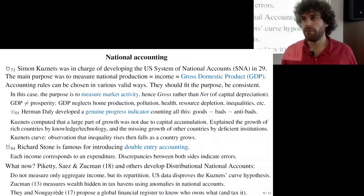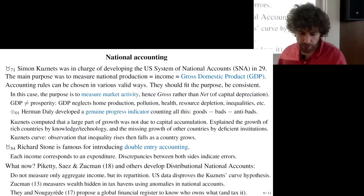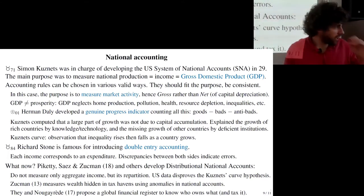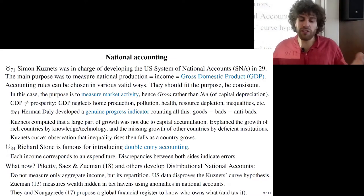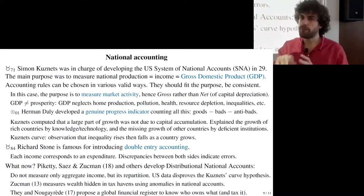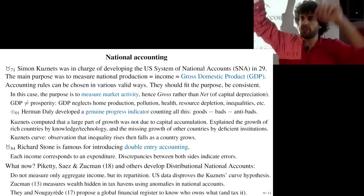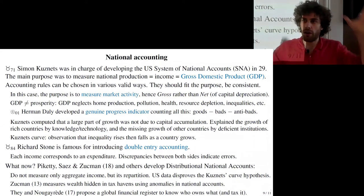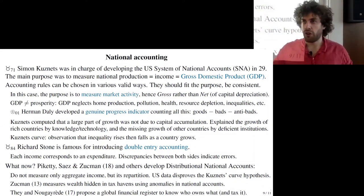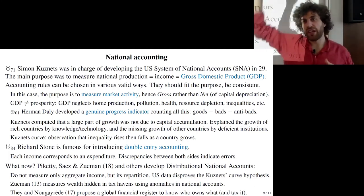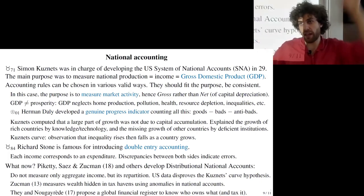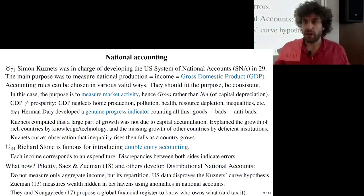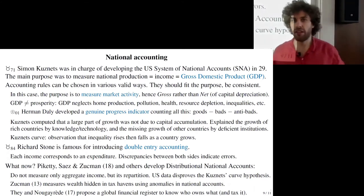Another Nobel Prize was awarded for improving national accounting: Richard Stone, who introduced double-entry accounting. Without double-entry, you simply sum a list of things. With double-entry, when you record something on one side you record a corresponding item on a separate column, and the two totals must match — for example, incomes and expenditures, or assets and liabilities. This is useful because discrepancies between the two totals indicate errors, helping verify that calculations are correct.